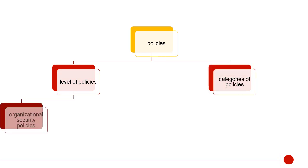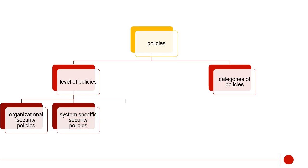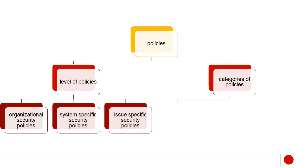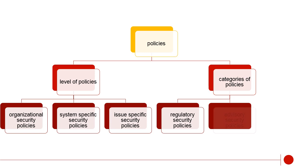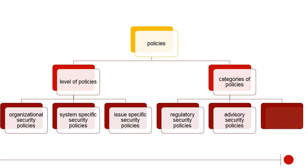Levels of policies are divided into organizational security policies, system-specific security policies, and issue-specific security policies. Categories of policies are divided into regulatory security policies, advisory security policies, and informative security policies.